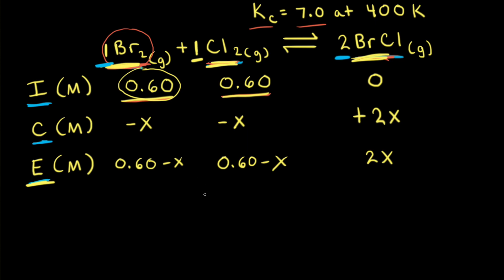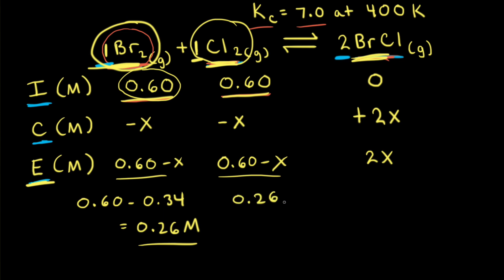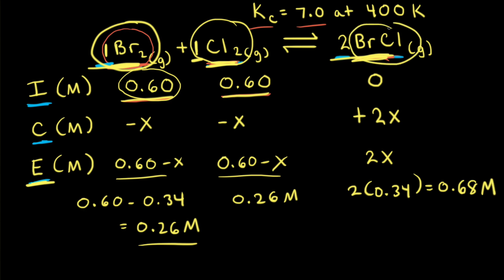Now that we know x equals 0.34, we can plug that into our ICE table and solve for our equilibrium concentrations. For Br2, it's 0.60 minus 0.34, which equals 0.26 molar. For chlorine, it's the same calculation: 0.60 minus 0.34, so the equilibrium concentration of chlorine is also 0.26 molar. For BrCl, it's 2 times 0.34, which equals 0.68 molar.